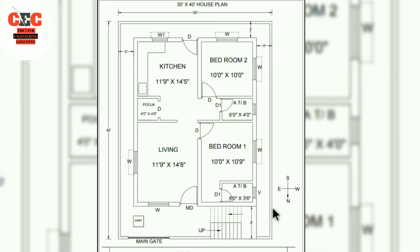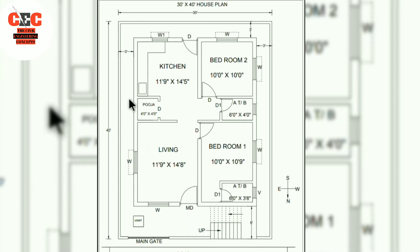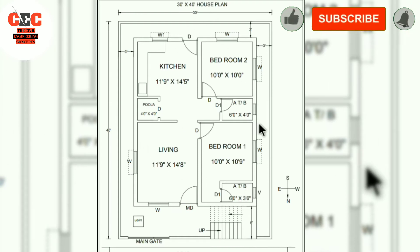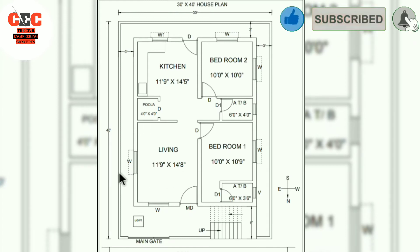The width of the staircase for two flights is 6 feet, each flight being approximately 3 feet. The width of the landing is 3 feet. An offset of 3 feet is provided all around the building — that is on the east, west, and south sides. A 5-inch thick wall is constructed for the compound wall.